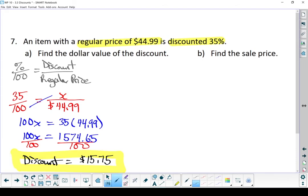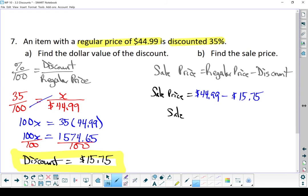To find the sale price, I'm going to take the regular price and subtract the discount. If I take $44.99, subtract $15.75, my sale price ends up being $29.24, and that right there is what the customer is going to pay.